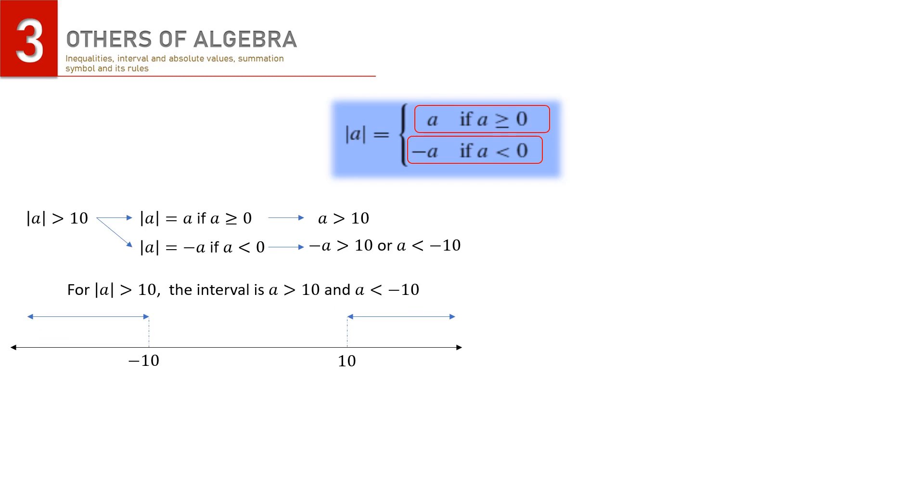Using the same procedure, we will have this for absolute value of a smaller than 10. So the absolute value of a smaller than 10 is the interval a between minus 10 and 10.